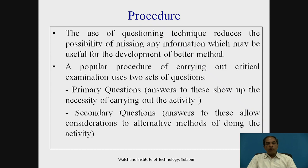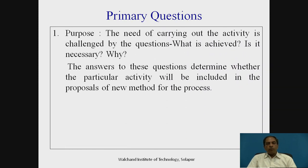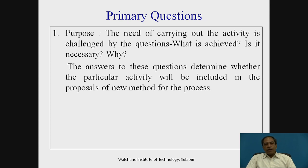Primary questions — first, Purpose: the need for carrying out the activity is challenged by the questions 'What is achieved?', 'Is it necessary?', and 'Why?' Answers to these determine whether the particular activity will be included in the proposal of a new method. For example, if a machining process is being carried out on a lathe, CNC, or VMC machine and we are doing a method study, after collecting and recording data and coming to the critical examination, the first question that comes to mind is: what is being done, and why is it being done?